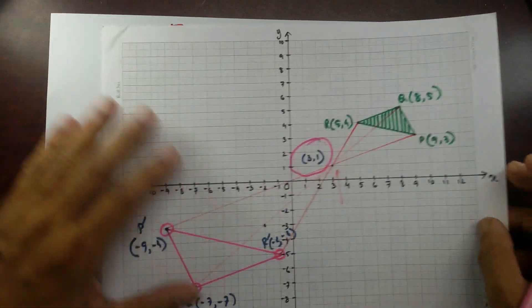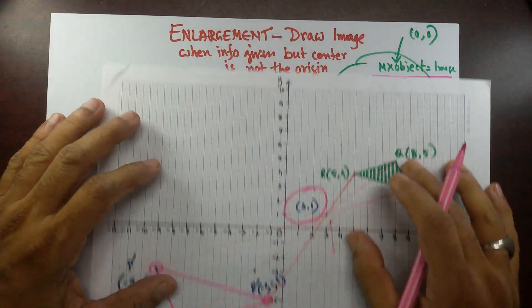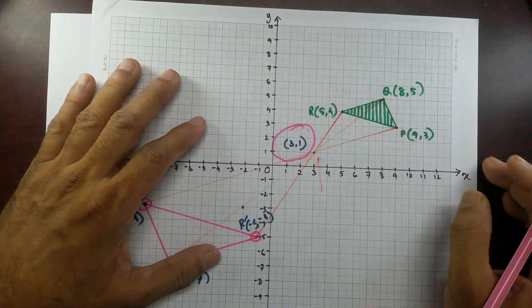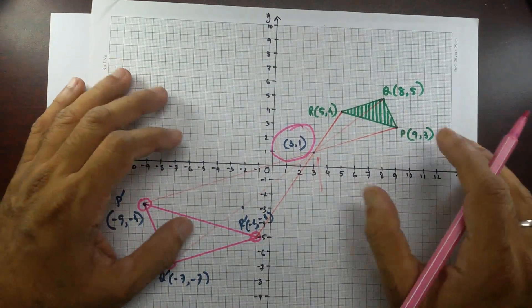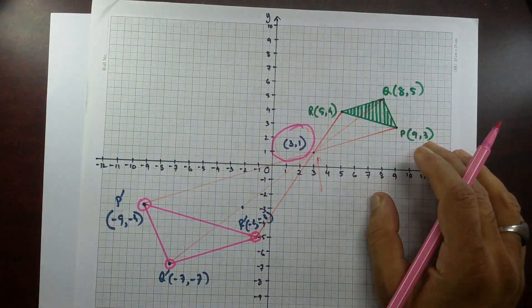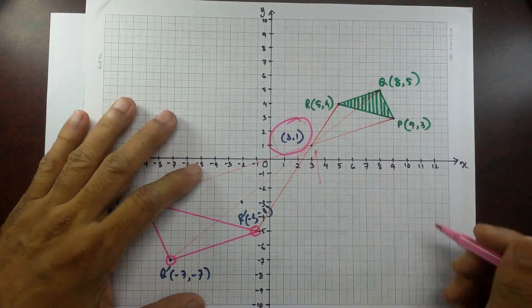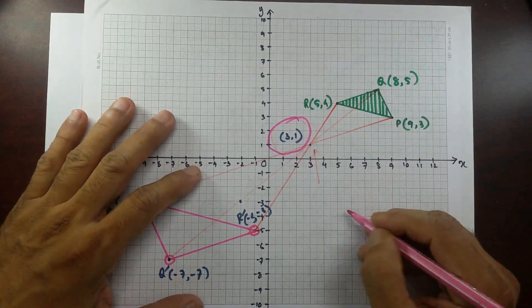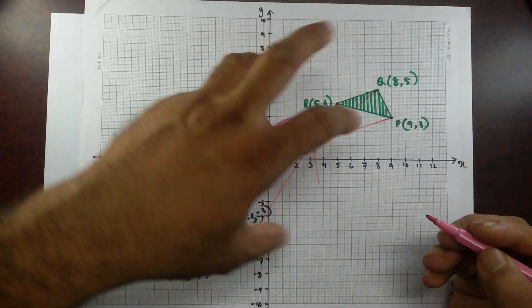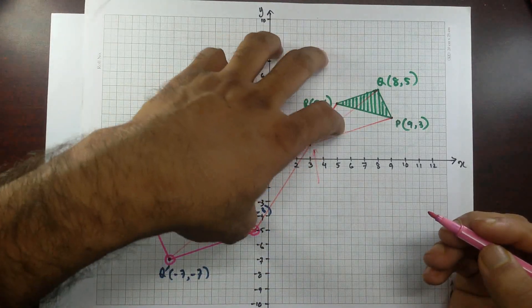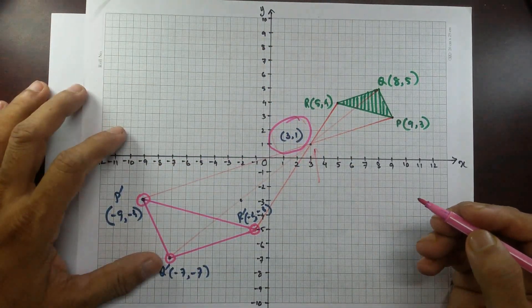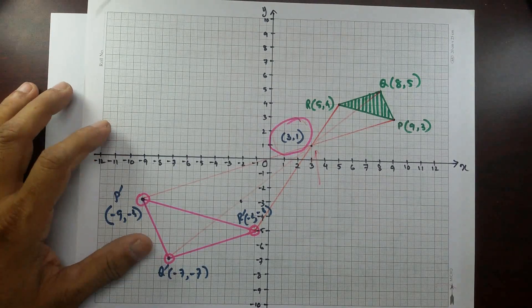That's how you draw the image when all the information is given but the center is not the origin — subtract to shift the center to (0,0), apply the formula, then add back to restore the original center. In the next video, I'll talk about how to find the area and the differences between cases of rotation, reflection, and enlargement when they all look the same.